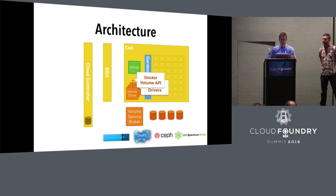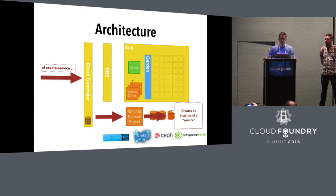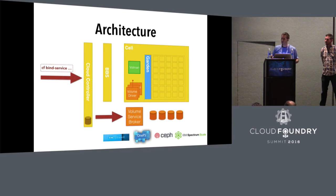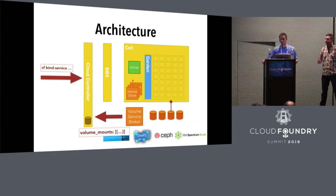How does it really work? It's just another service, but a slightly special one. Your developer issues the same CF create call. Cloud Controller receives that and forwards it onto the volume-specific service broker, which does whatever it needs to do to create a service instance. In our reference implementation for Ceph, it creates a top-level folder named using the service ID. Then when you want to bind it, you just issue a CF bind call — Cloud Controller forwards that to the volume-specific service broker, which issues one or more volume-mount instructions back to Cloud Foundry.